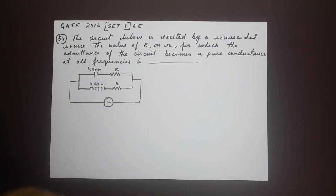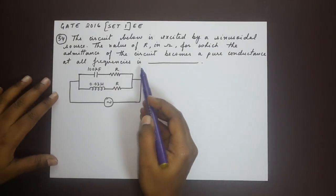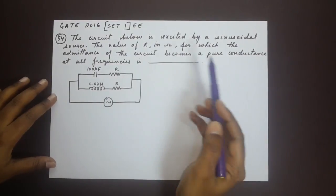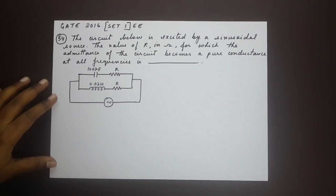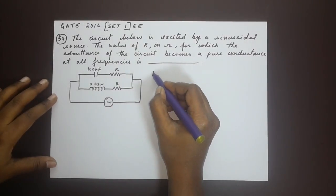So here the question says for admittance of the circuit becoming pure conductance. Now that is possible only when the imaginary portion of the admittance is zero. Let me write that down.